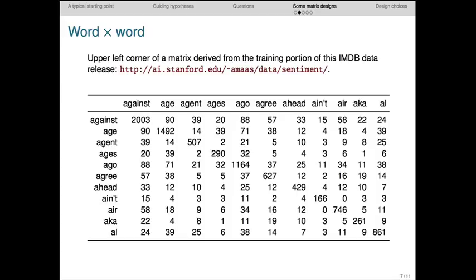I tend to prefer dense matrices like this one. Implicit in the design is a notion of co-occurring context. For this example, the notion of co-occurrence is just being in the same document. So for example, this 39 here means that the words against and agent appear 39 times together in documents in this corpus.